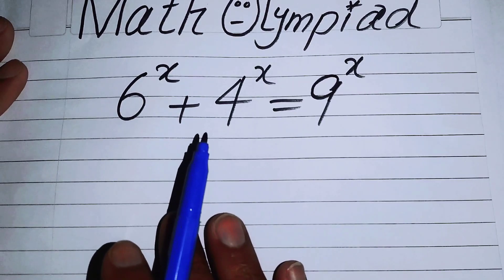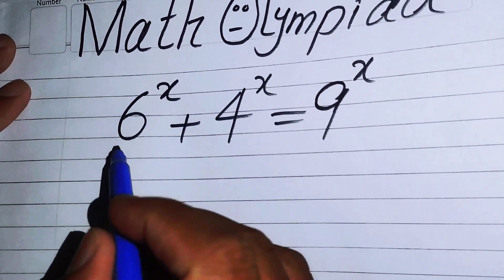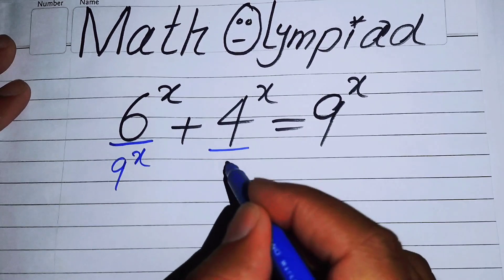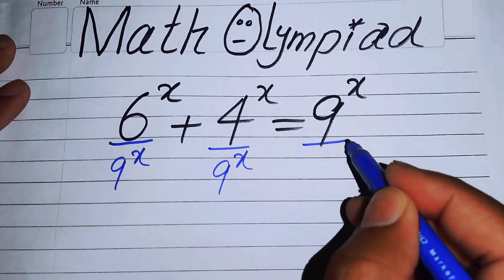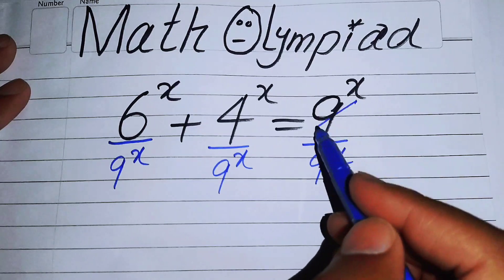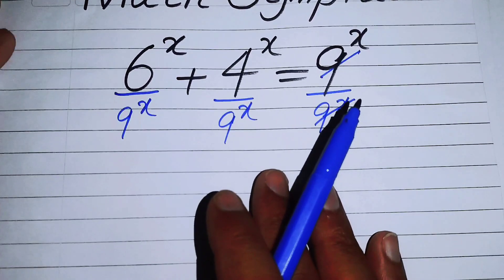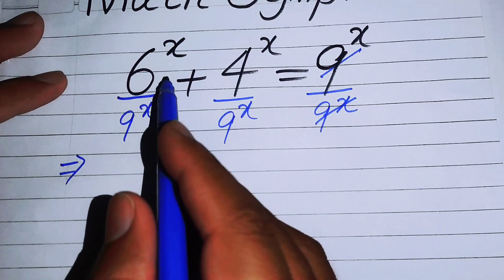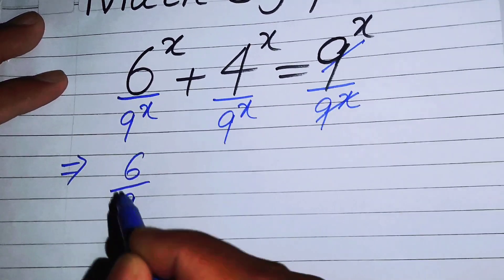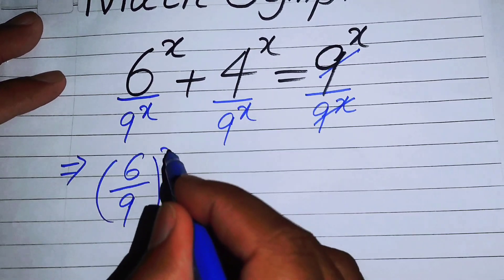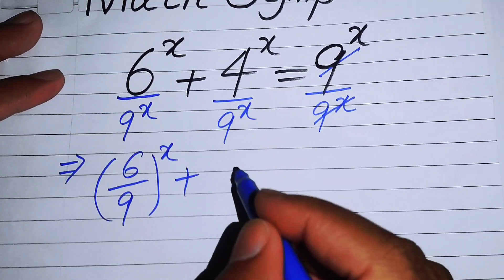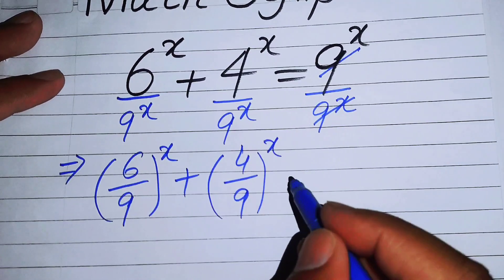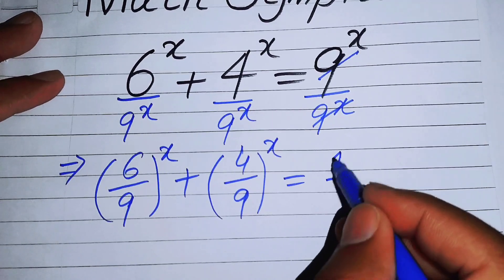The very first thing we are going to do is divide both sides by 9 to the power of x, so it will become this form. Here you can see these two terms simplify, and we can make the coefficients of both terms the same, giving us 6 over 9 to the power of x plus 4 over 9 to the power of x is equal to 1.